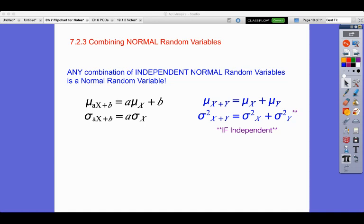Hi folks, we want to talk about combining normal random variables, not just any random variables, but specifically normal. The cool thing about this is any combination of independent normal random variables generates another normal random variable.